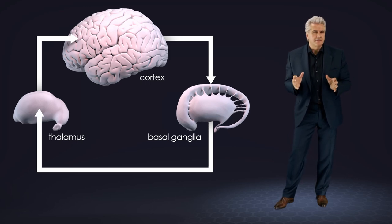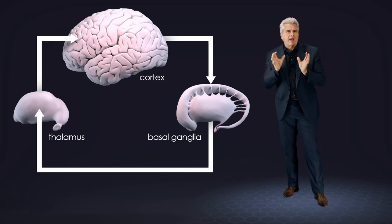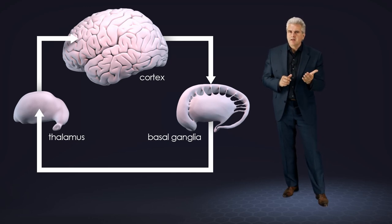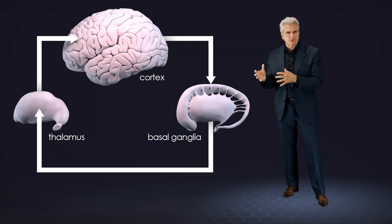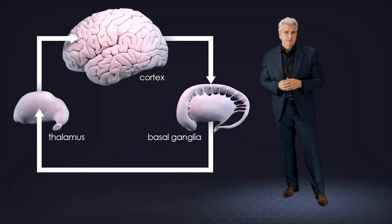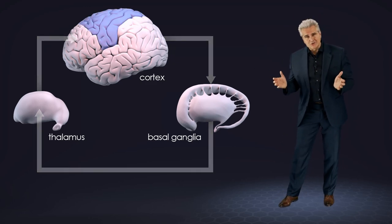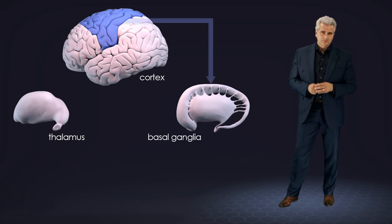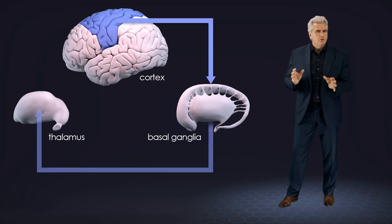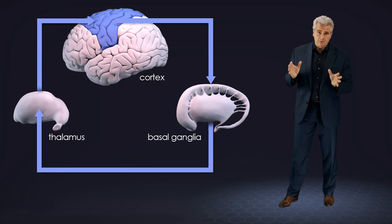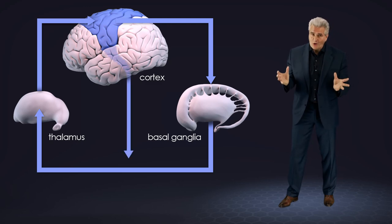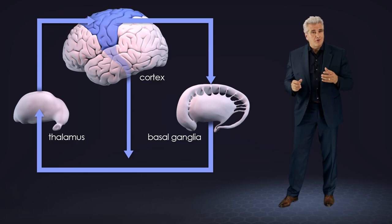Later studies demonstrated basal ganglia involvement not only in motor execution but also in motor planning and in sensory motor integration. But our concept of the basal ganglia changed in the last years from a purely motor or sensory motor one to a more complex set of functions.